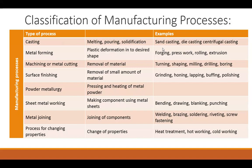The next manufacturing process is the Powder Metallurgy Process wherein pressing and heating of metal powder is used for converting it into the required finished product. Here the raw material is in the form of powder, and using different types of powder metallurgy techniques, it is converted into the required finished product.